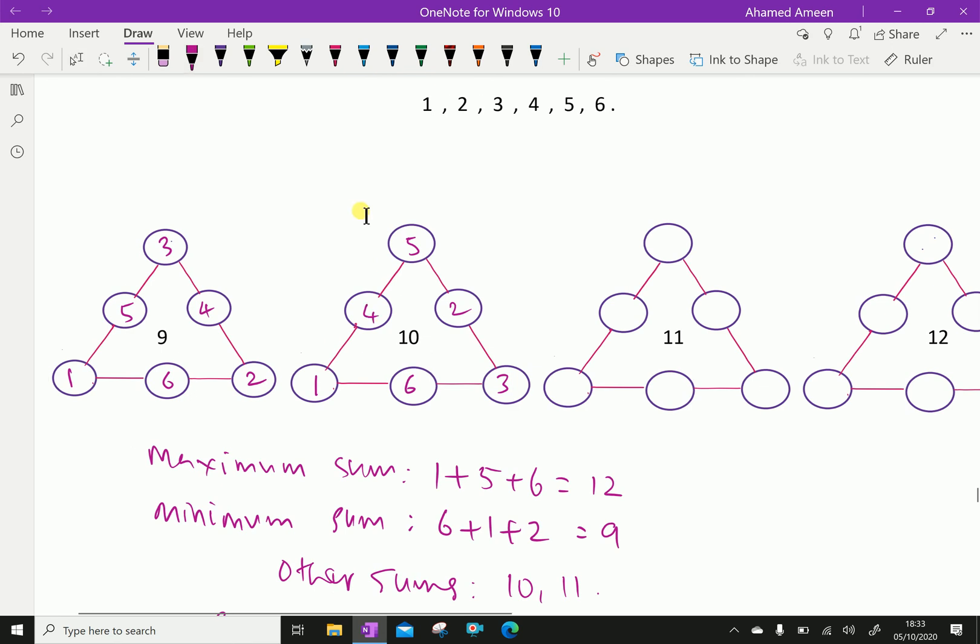So, we can check any sides addition. That is, 5 plus 4 is 9, 9 plus 1 is 10. 1 plus 6 is 7, 7 plus 3 is 10. Like this, every side is getting 10.